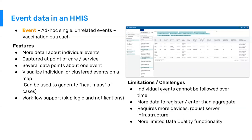Some limitations of event data: individual events cannot be followed over time — we're talking about discrete, ad hoc events where one event is not connected to another. Another limitation is that the reporting burden is often higher. There's more data to report for events than with aggregated data. If you're recording 20 events using event capture, you're recording 20 different events and capturing data for each one, whereas an aggregated form would just report one form aggregating data across those 20 events.